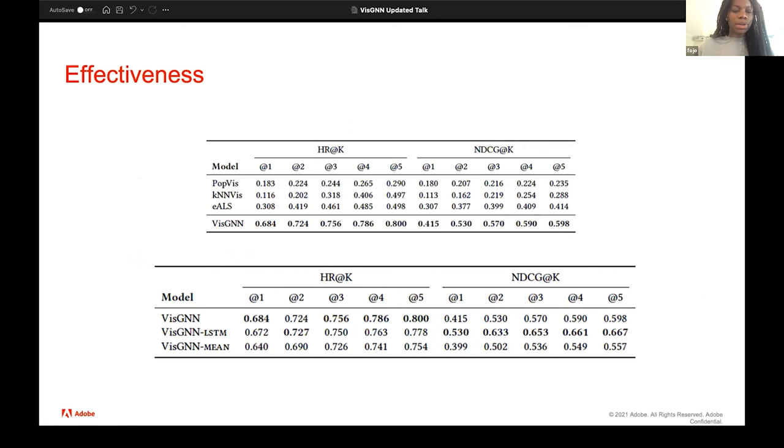So we performed experiments to determine the effectiveness of our model. So we looked at two metrics. We looked at the hit rate at K and then we looked at the normalized discount cumulative gain at K. And essentially how this works is that we chose a random visualization that the user had. And then we added 19 negative visualizations. So there was one positive visualization, 19 negative ones. And essentially we're looking at the likelihood of finding that positive visualization at each hit.